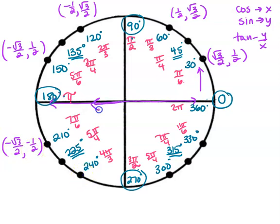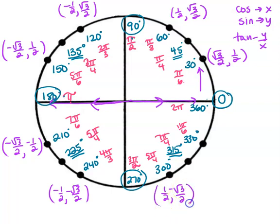Going down to 210, I'm traveling the long way left and the short way down — so both x and y are negative. At 240, I'm going the short way left and the long way down. At 300, the short way to the right is positive one-half and the long way down makes y negative. At 330, I'm going the long way right and the short way down.